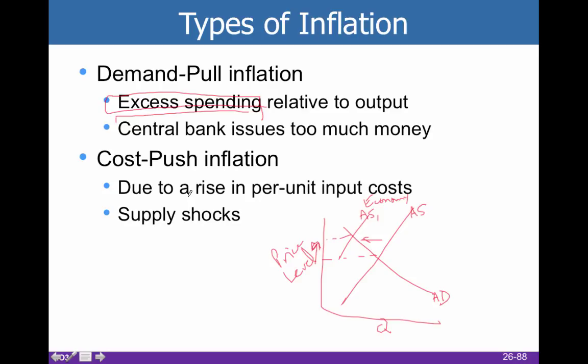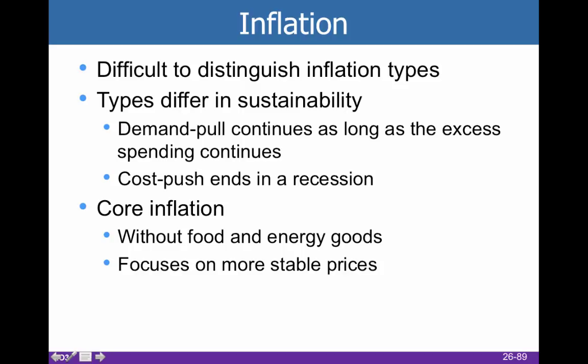When inputs become unexpectedly and significantly more expensive, we have cost-push inflation. This is difficult to deal with because you're either going to wind up with a recession — and then the economy will adjust the way Adam Smith said it would eventually — or whatever caused the supply shock is going to have to work itself out. Demand-pull will be stopped when excess spending goes away; cost-push typically ends in a recession.